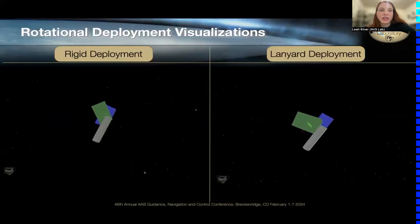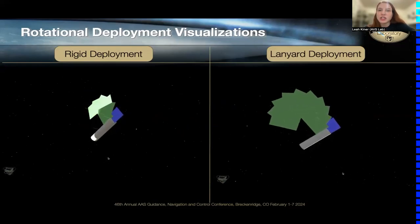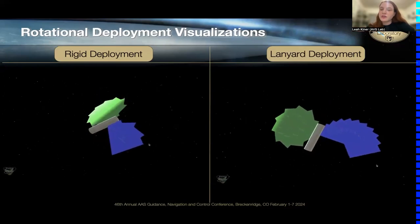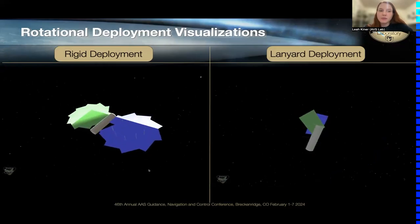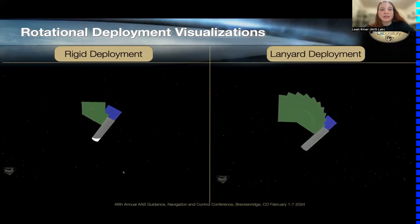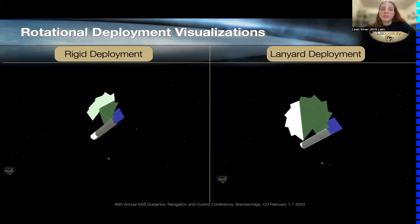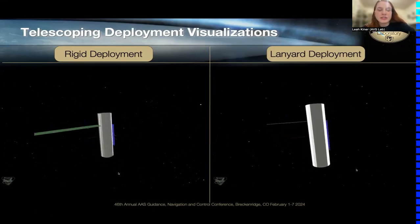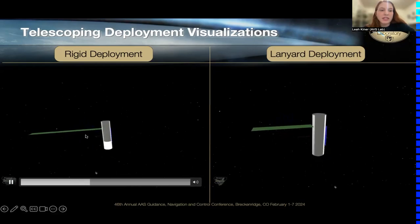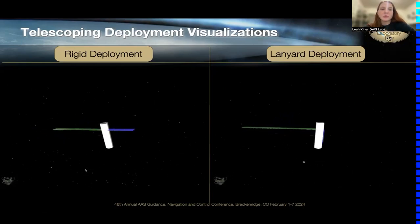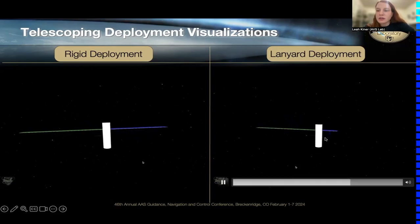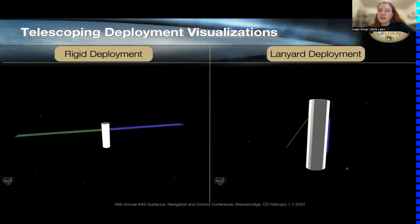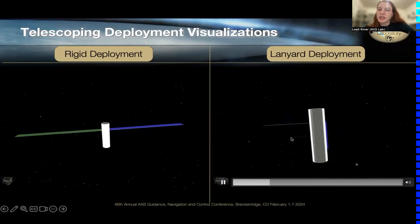To clearly illustrate the difference between rigid and lanyard cases: in the lanyard rotational case, all elements start unfurling together and snap into place at the final time, whereas in the rigid case all elements rotate as one and sequentially lock into place. For the telescoping scenario, in the rigid case each element has equal spacing as they are pushed out one by one, while in the lanyard case all array frames gradually move farther apart until locking into place together at the final time.